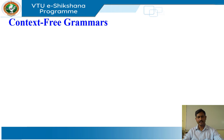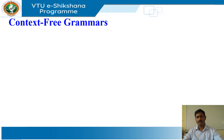A context-free grammar consists of terminals, non-terminals, a start symbol, and productions. Terminals are the basic symbols from which strings are formed. The term 'token name' is a synonym for terminal, and we use the word 'token' for the terminal when talking about just the token name. We assume that the terminals are the first components of the tokens output by the lexical analyzer.